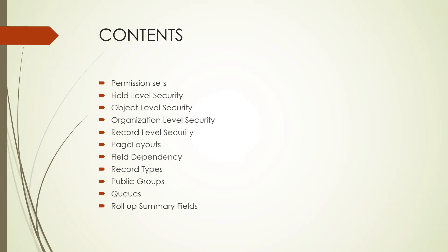Public groups allow us to create a list of users in a single group. Queues are useful mainly in the Service Cloud — when a customer raises an issue, the ticket goes to a queue. For example, when joining an organization, getting a laptop goes to the network team queue, while getting an ID card goes to the admin queue. We'll learn how to create and assign these queues in Salesforce.